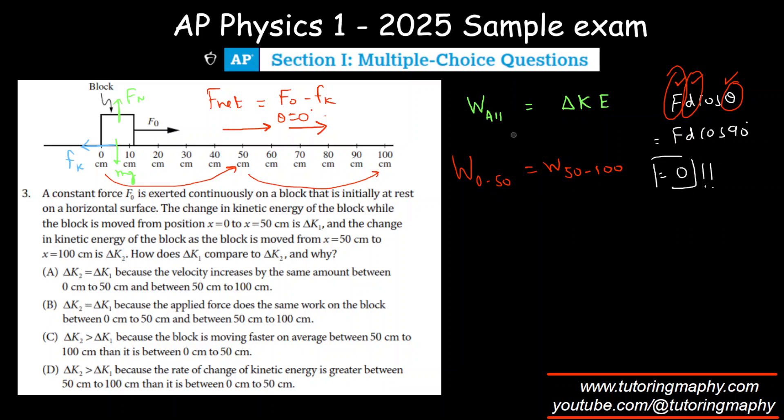So if the work is same and work done by all forces is change in kinetic energy as per the work energy theorem, don't you think I can say that the kinetic energy 1 and kinetic energy 2, change in kinetic energy 1 and change in kinetic energy 2 must also be equal? So it can be option A and B. A because the velocity increases by the same amount between this or because the applied force does the same work, obviously it should be B, right? We just talked about this. That's the reason that the applied force does the same amount of work between those two instances. So it has to be B.